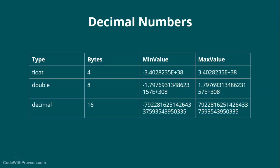Now let's move on to decimal numbers. Similar to whole numbers, we have different types of variables to represent decimal numbers: float, double, and decimal. Float takes 4 bytes, double takes 8, and decimal takes 16. Although decimal takes 16 bytes, its range of values is actually lesser compared to double. The key reason is that decimal numbers are represented in a different manner compared to double and floating point variables.